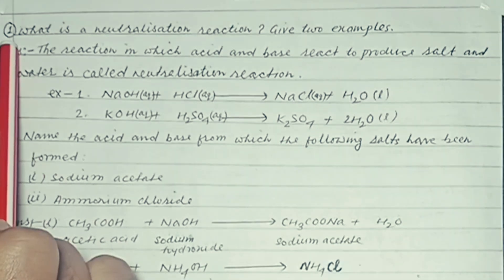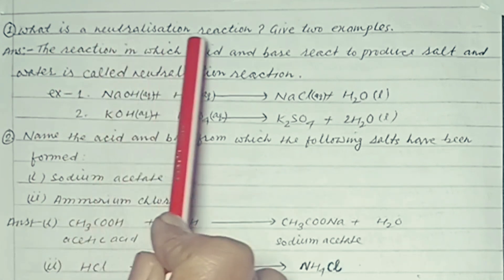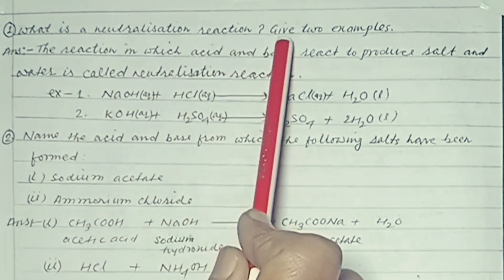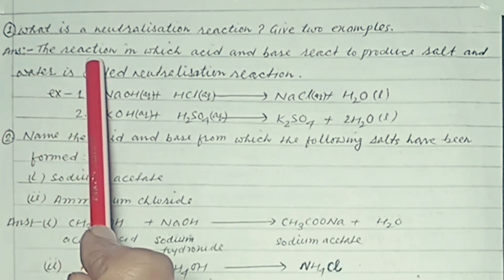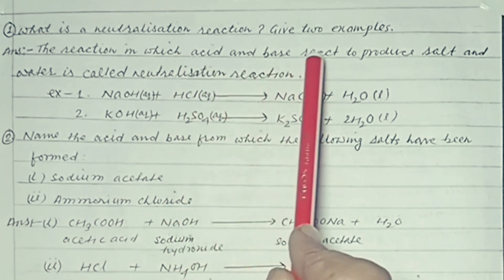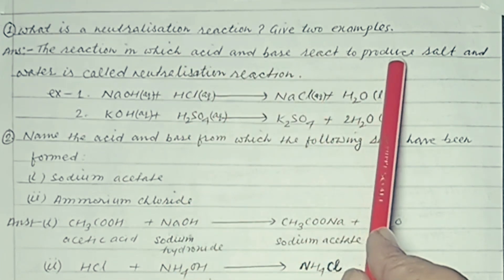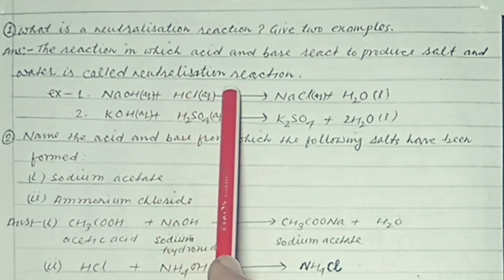Question number 1. What is a neutralization reaction? Give two examples. Answer: The reaction in which acid and base react to produce salt and water is called neutralization reaction.